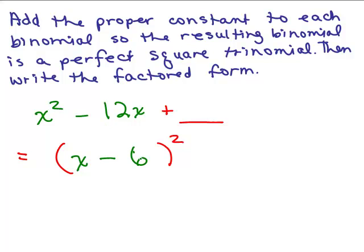So notice I'm figuring out the factored form first, and then it's easy to figure out what you'd have to add. Just 6 squared is 36, and there you go. So I've now realized that 36 is what I add to make this a perfect square trinomial, and then the factored form would be X minus 6 squared.